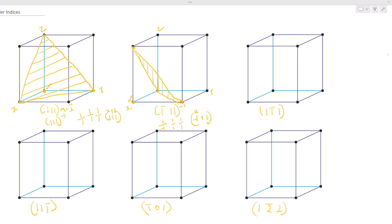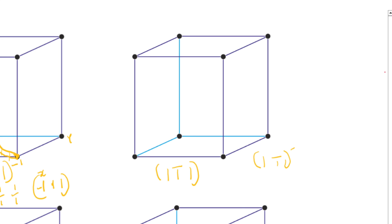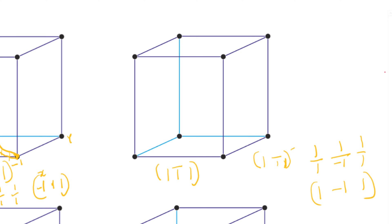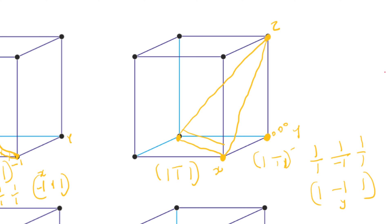For (1-11), we do the reciprocal: one over one, one over negative one, one over one, which leads to one, negative one, one. Our Y is negative, so we travel backwards on Y — we must pick the origin accordingly. X is one, Y is minus one, Z is positive one. Drawing this gives another triangle, literally the inverted version of the previous plane.